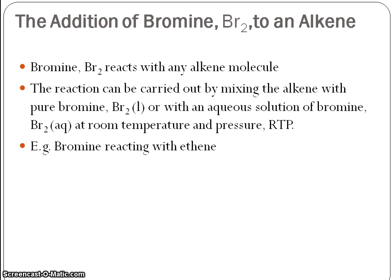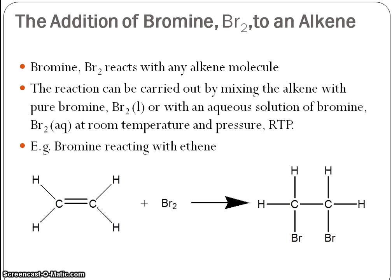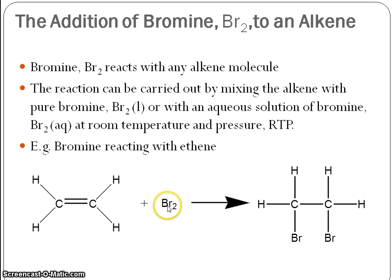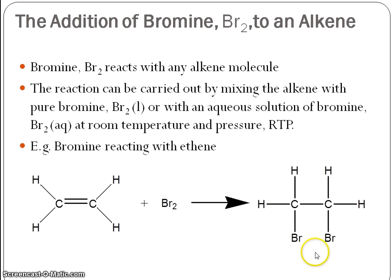A simple example showing ethene with bromine. You can see that the bromine reacts with the carbons of the double bond — two bromines, each one adding to a carbon either side of that double bond, giving you a bromine atom on each of the two carbons associated with the double bond.